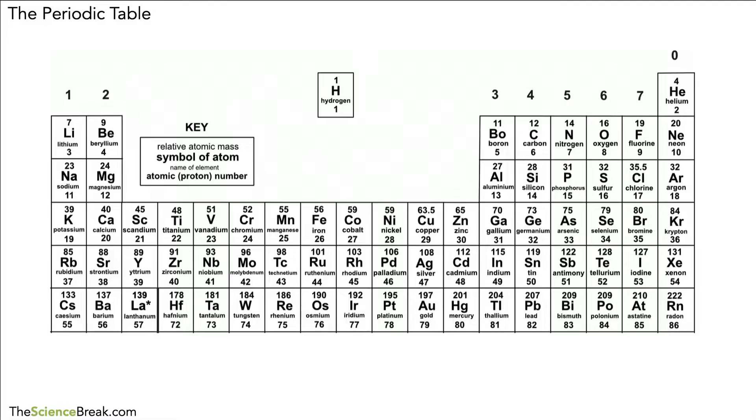First, where are the metals and non-metals in the periodic table? Here is a copy of the periodic table. If you draw a line in this way here, like some stairs, everything to the right of that line is a non-metal and everything to the left is a metal.